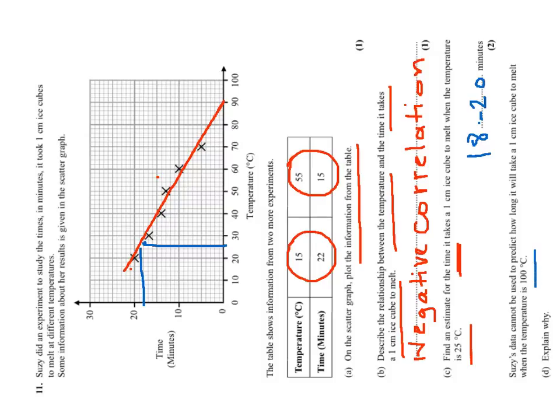Why can't we predict 100 degrees? 100 degrees is beyond our line of best fit and it will give us negative time. That's the reason. So negative time.